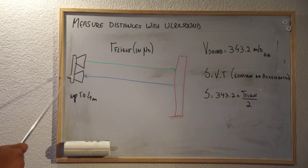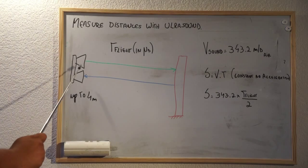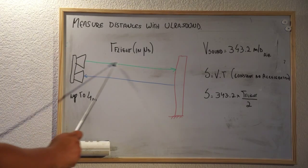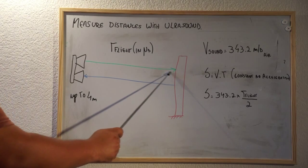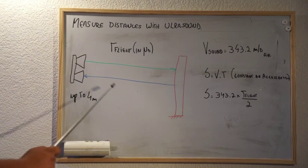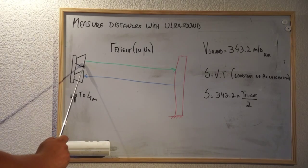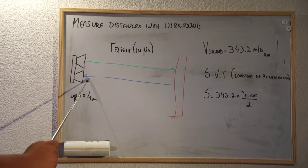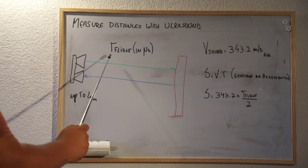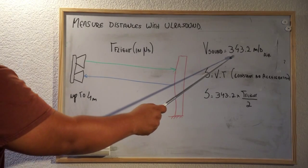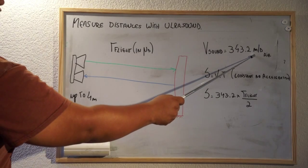We give it a pulse from our microcontroller, and what it's going to do is create a burst of ultrasound that will travel, eventually bounce off an object, and come back. All we need to do is measure this time — the time the pulse went to something and came back, which we'll call T-flight. We consider that the speed of sound is 343.2 meters per second in air.